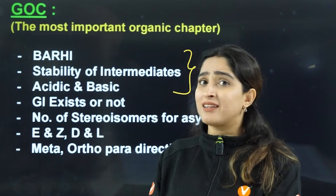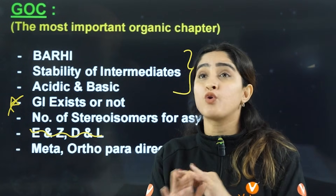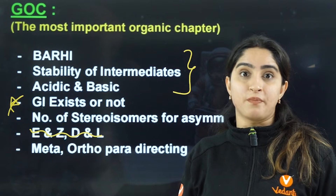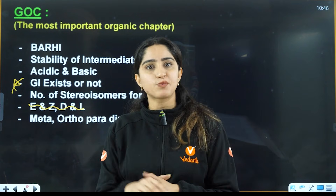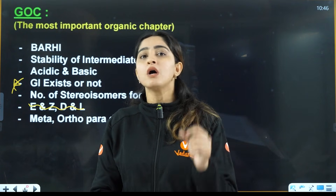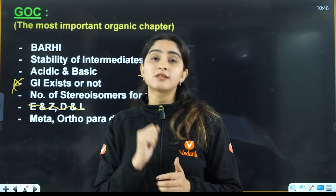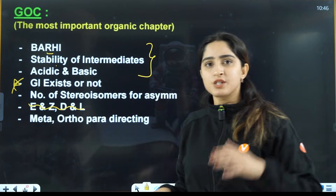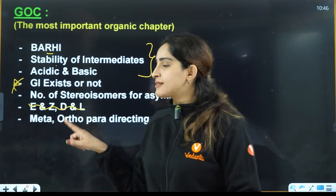In isomerism, geometrical isomerism — whether it exists or not — is very important. E and Z, and D and L configuration, you can skip if you don't want to do that much, but I would advise doing E and Z. Geometrical isomerism you should not skip. For number of stereoisomers, do the formulas for symmetrical and asymmetrical compounds, and calculation of optical and geometrical isomers. At minimum, do number of stereoisomers for asymmetrical compounds — in 2025, they have asked about asymmetrical compounds and their stereoisomers. Then, meta-ortho-para directing: whether phenol, aniline, or benzaldehyde are ortho-para or meta directors — all based on resonance.